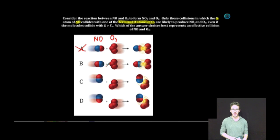Let's look at answer B. Here the nitrogen side of the NO molecule is striking the central oxygen atom in ozone. Now, we want the nitrogen side of NO to strike ozone, but it needs to strike the terminal atom. Incorrect. Not an effective collision.